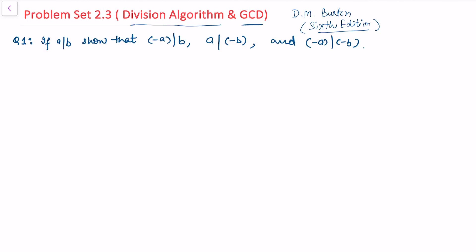In question 1, it is given that if a divides b, then we need to show: negative a divides b, a divides negative b, and negative a divides negative b. This is straightforward — by definition, since a divides b, we have b = a·r for some integer r.